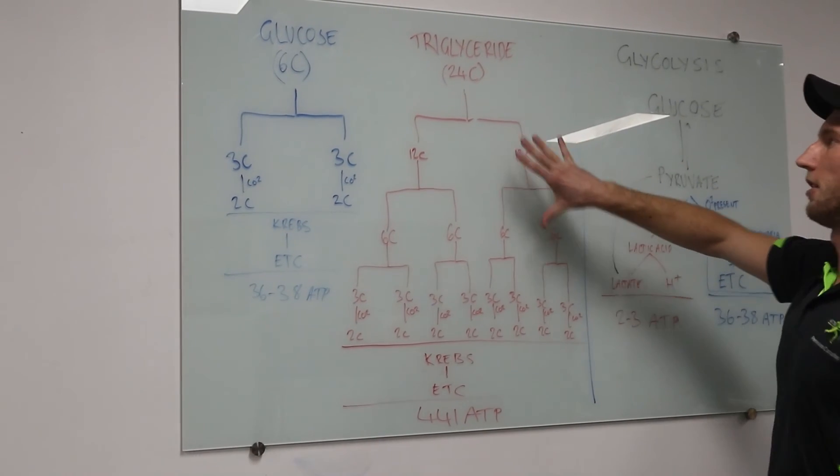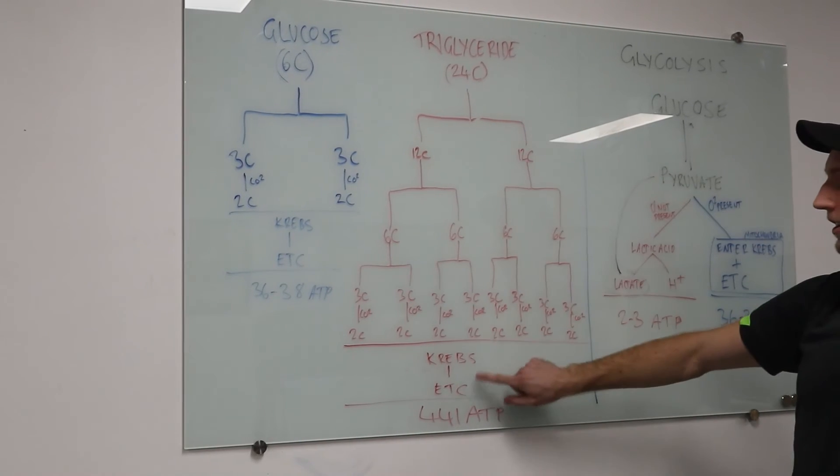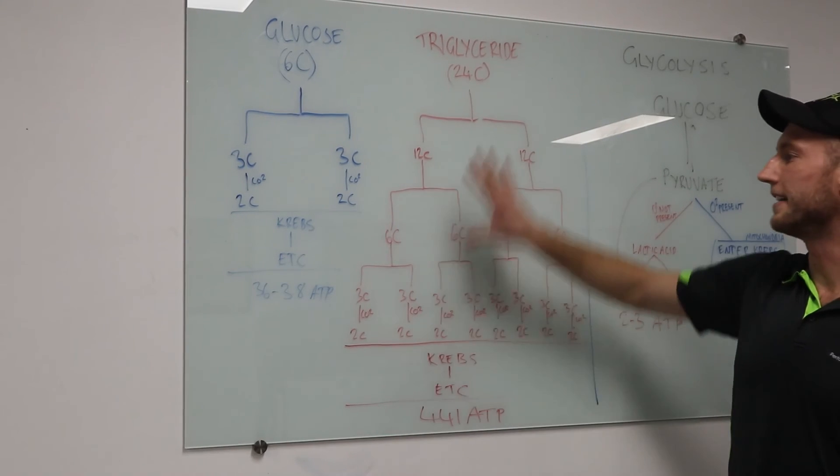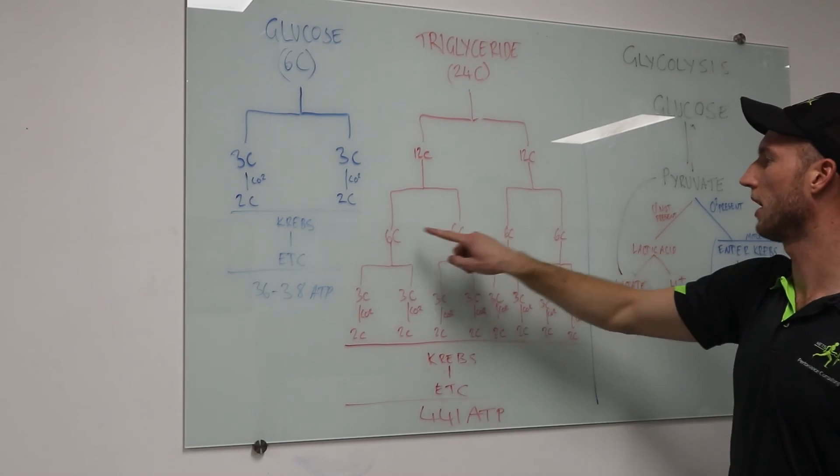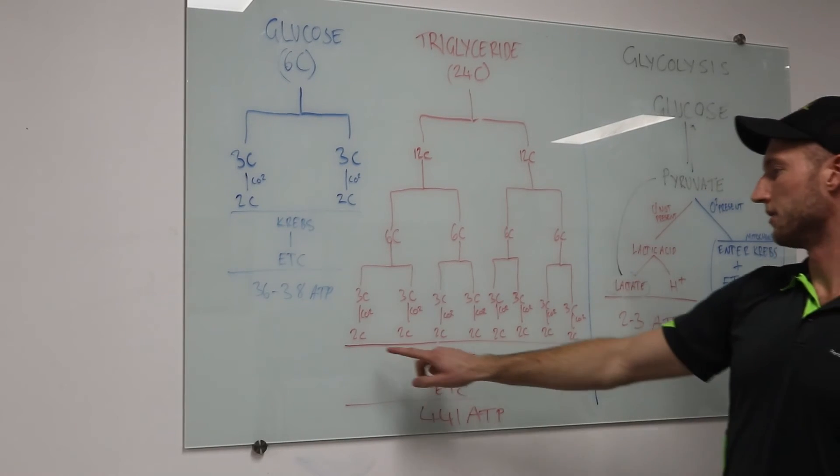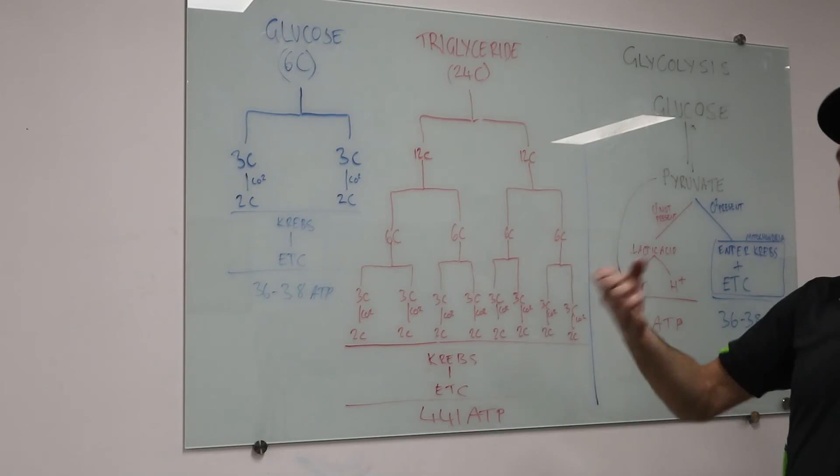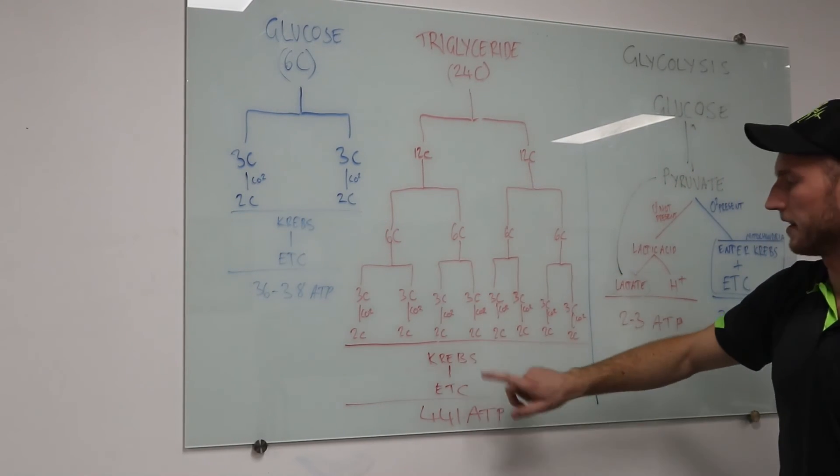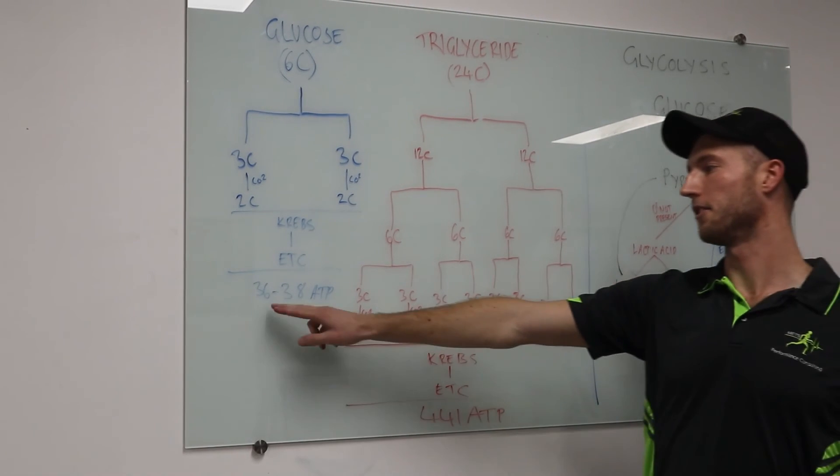Then we go on the triglyceride side, beta-oxidation. This occurs in the cytosol as well, in the fluid of the mitochondria. It still needs to go through the Krebs and the electron transport chain, just like this, but you can see the extra work that's needed to take place to get down to a two-carbon molecule. 24 divided by two, you go 12 and 12, 6 and 6, 3 and 3. CO2, we get down to two. What you'll notice is we get two, four, six, eight. Eight units of chemical energy here compared to only two. Once it goes through the Krebs and the electron transport chain, we get a whole lot more ATP, 441 ATP compared to 36 to 38.